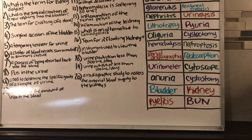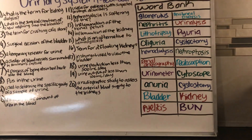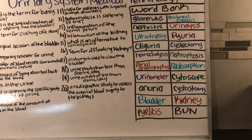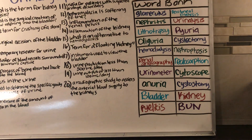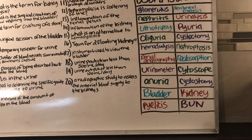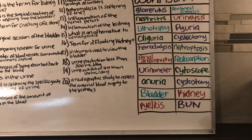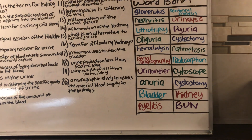Number eighteen: urine production less than 500 milliliters a day would be considered what? Oliguria.